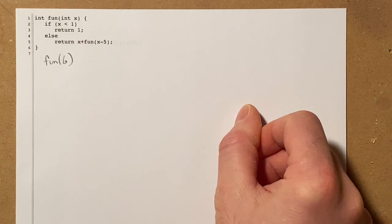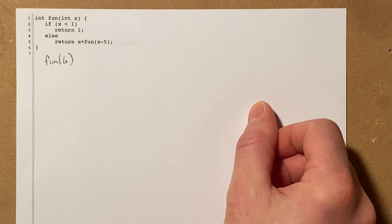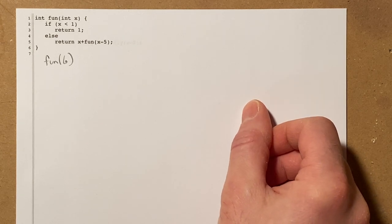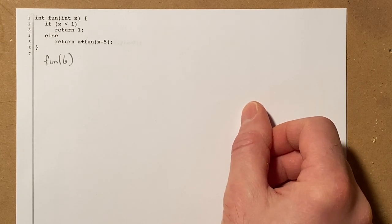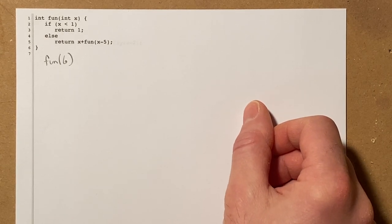Here's the first one. So we have this function fun. It takes a single integer parameter x and then the terminating condition is that if x is less than 1 it returns 1, otherwise it returns x plus fun of x minus 5.